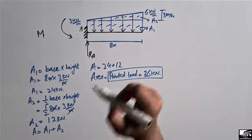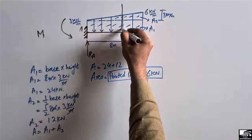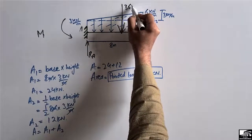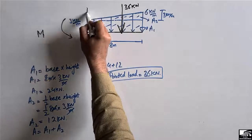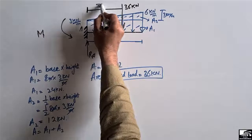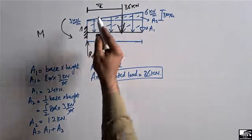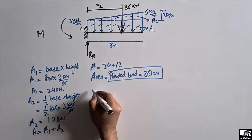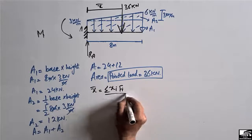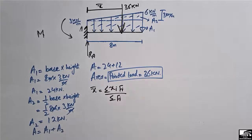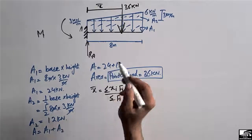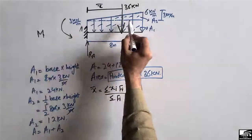This load acts at the centroid of the trapezoidal load. We also need to find the centroidal distance from support A to the 36 kilonewton load. To find x-bar, we use the formula: x-bar equals summation of xi times fi divided by summation of fi. Here xi means the centroid of each portion — the rectangle and the triangle.